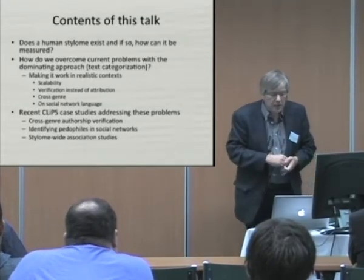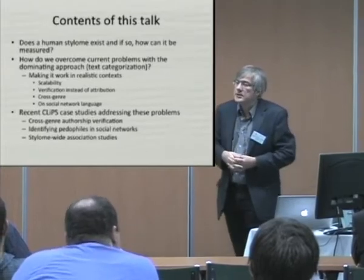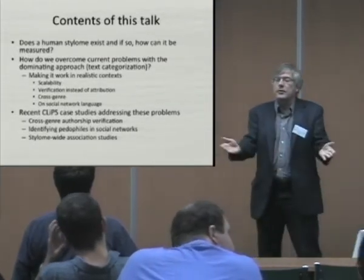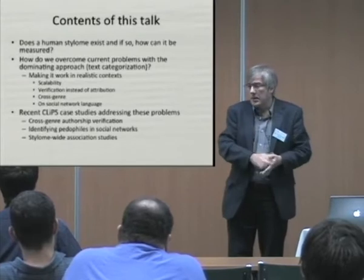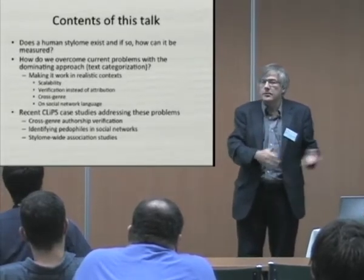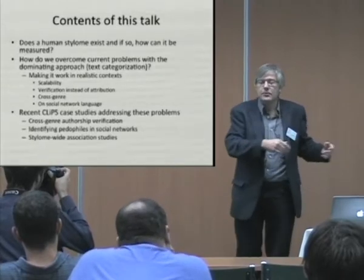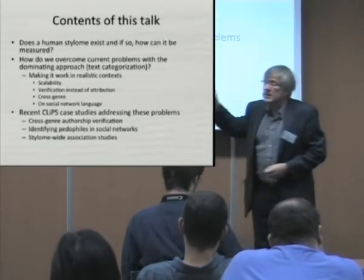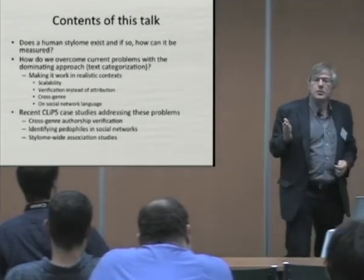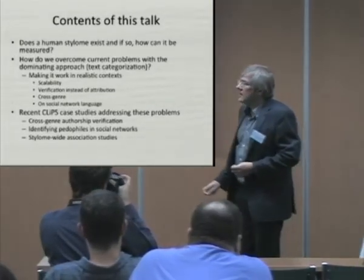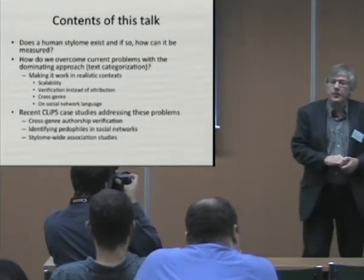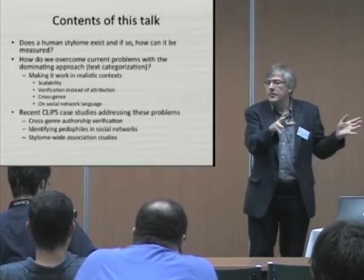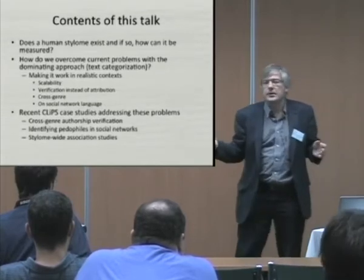There's the problem of cross-genre, which has not been touched upon except in a little bit of work that I will describe. What if you have a suicide letter and you want to ascertain that it was really written by the deceased and not by someone else? That's a difficult problem because you only write a suicide letter once. It's a very specific style of writing, and if you only have blogs or scientific articles, it's very difficult to extrapolate from a classifier trained on that type of text to a completely different text genre.